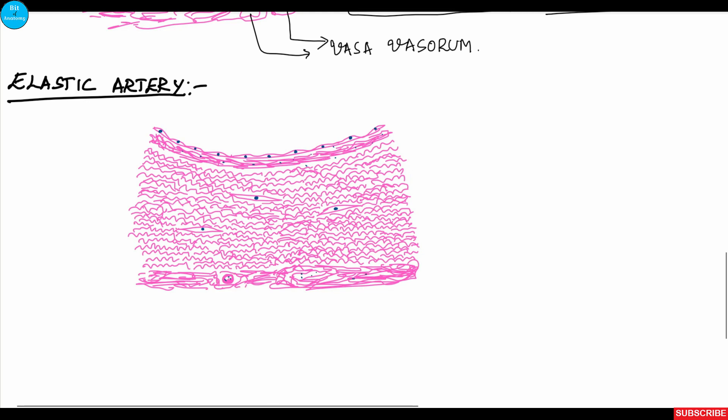Functionally, the endothelium allows passage of gaseous and nutritive substances. The elastic fibers in the tunica media help maintain continuous blood flow during the diastolic phase. During ventricular systole, blood enters the elastic arteries like the aorta and pulmonary trunk, causing them to expand. During diastole, the elastic fibers retract and push blood forward, maintaining continuous flow.